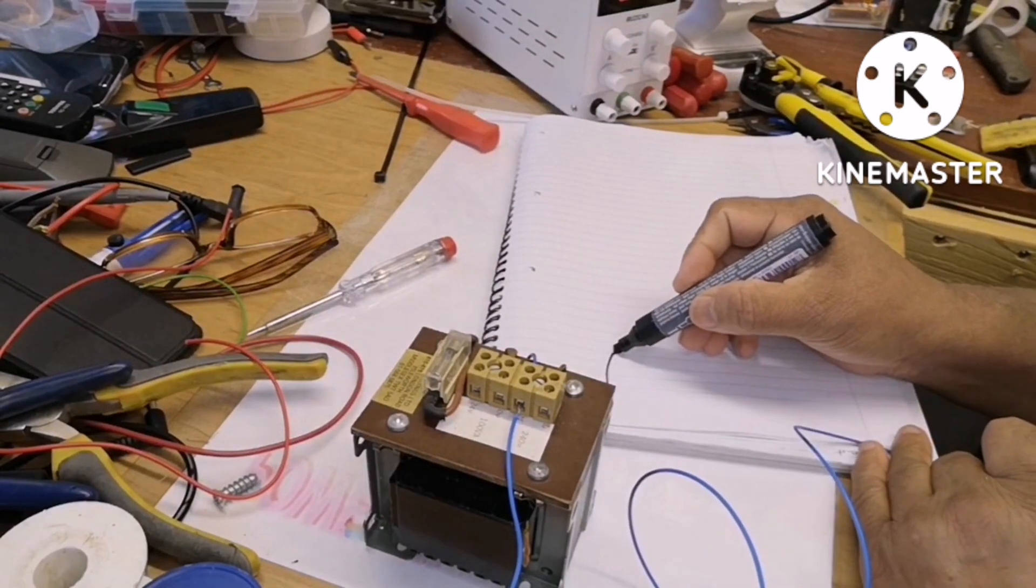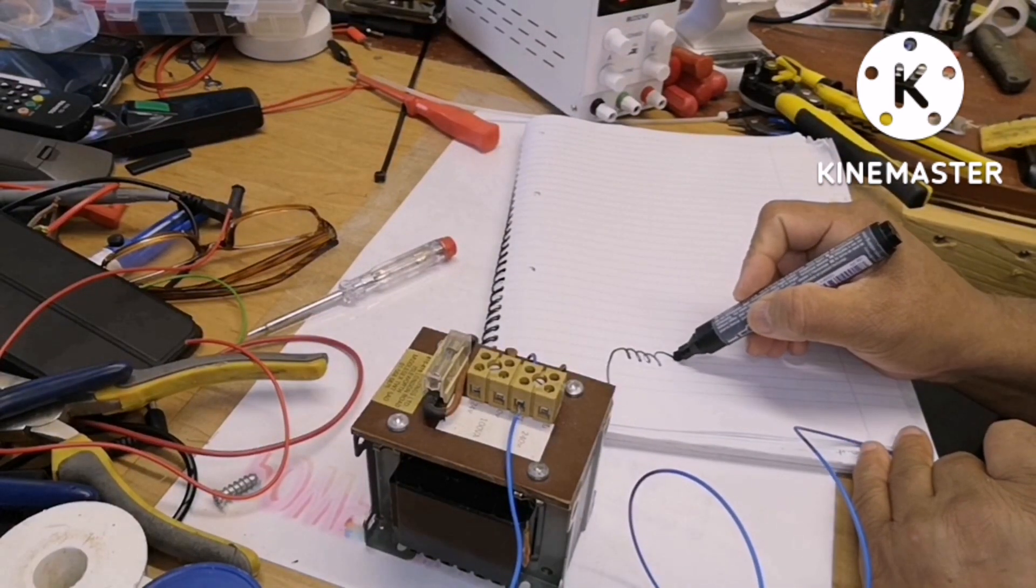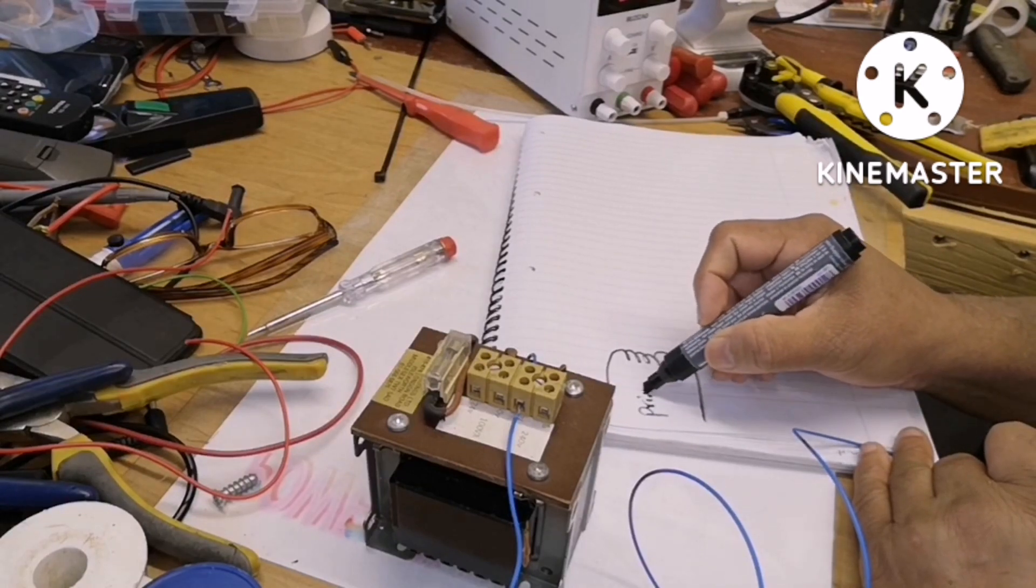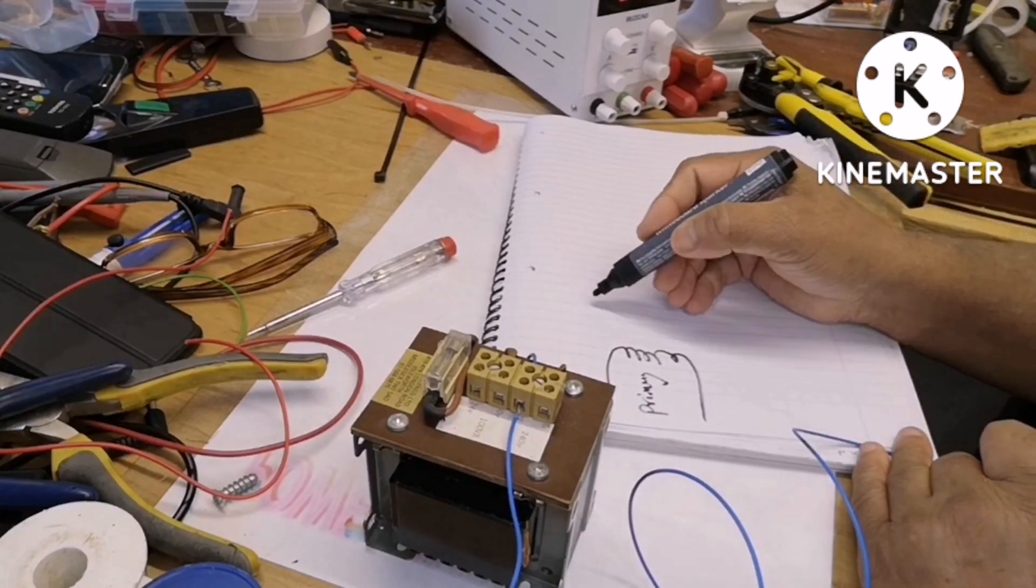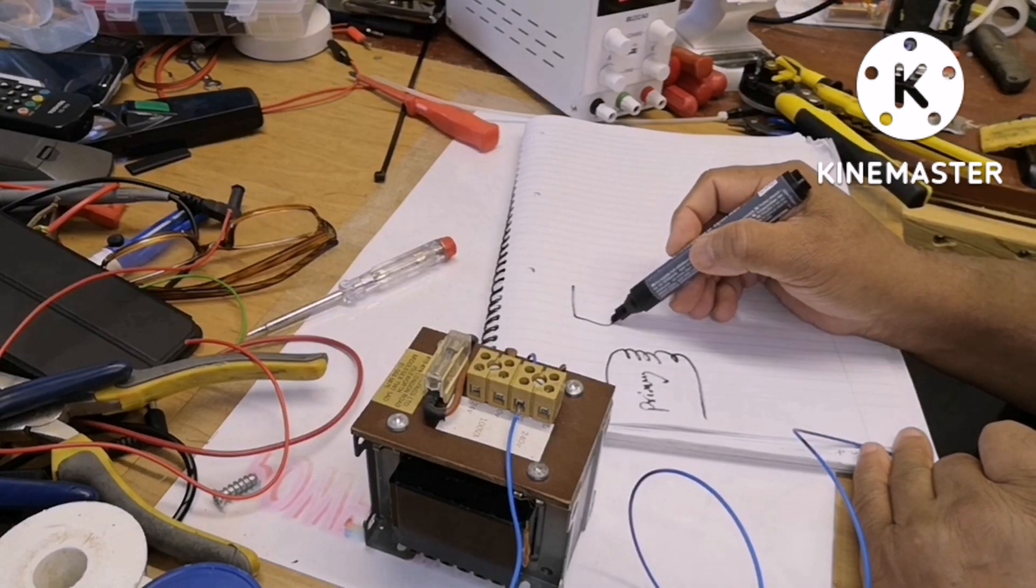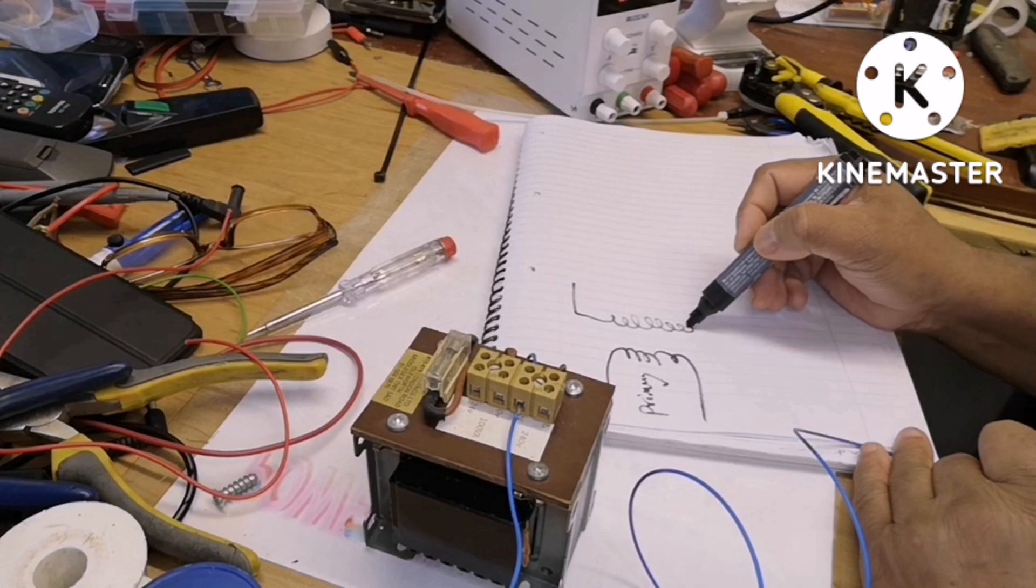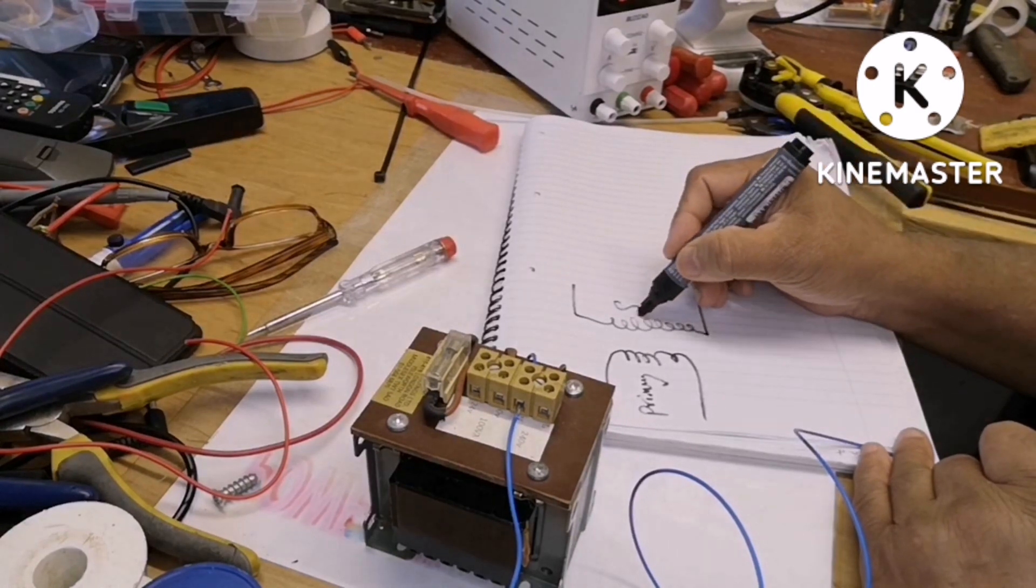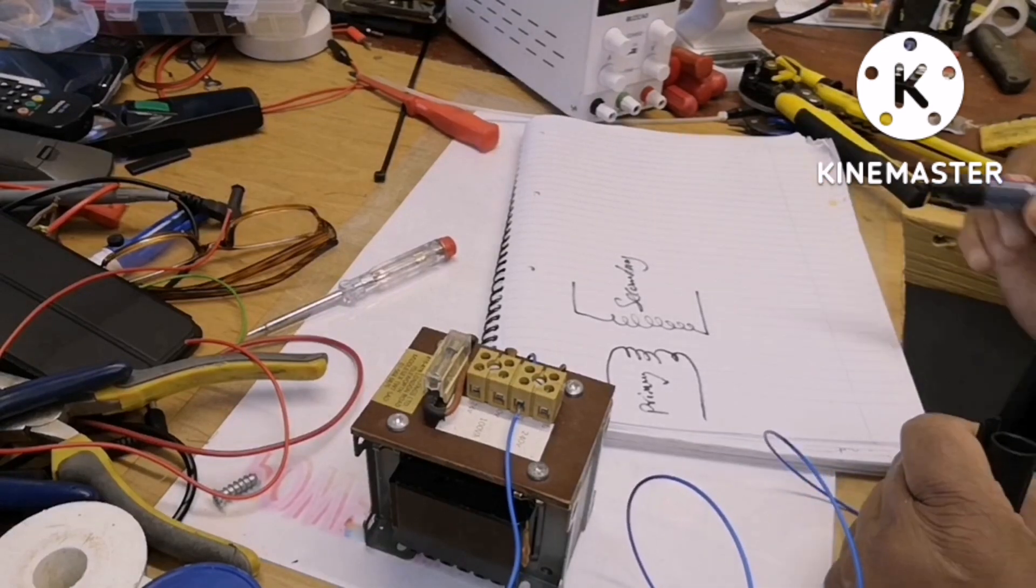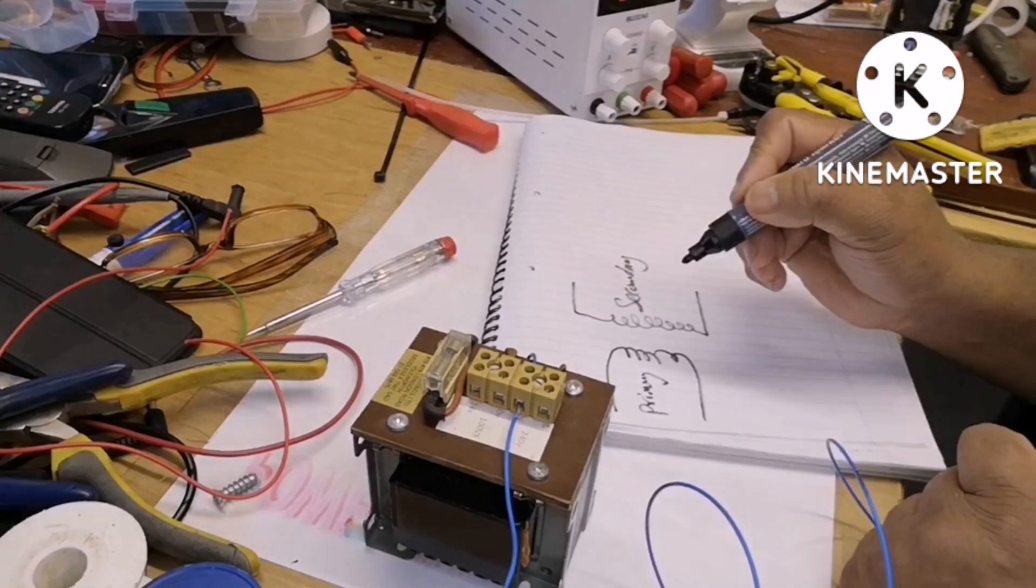I'll make a quick sketch. This is the coil of the transformer as a primary, and this is a secondary coil. From primary to secondary, 240 volts AC.